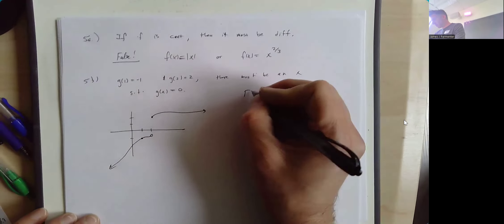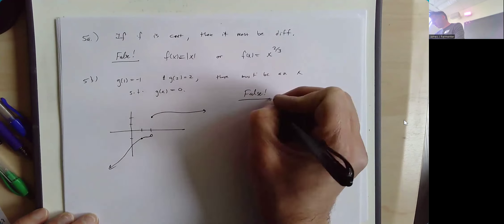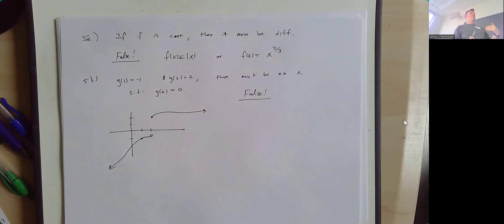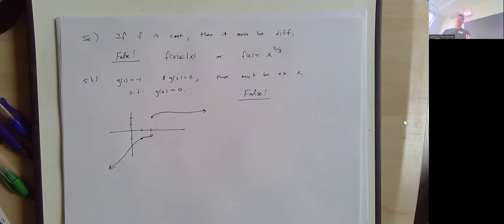Usually, true or false questions are easier to answer as false because you just need a counterexample. Figuring out something is true means you kind of have to prove it for every possible situation. So for true or false, it's worth starting from the side of: how might this be false? Can I find a counterexample to what's being claimed?